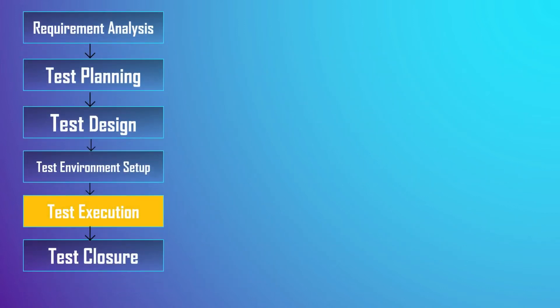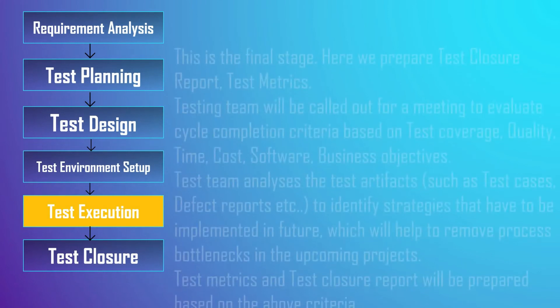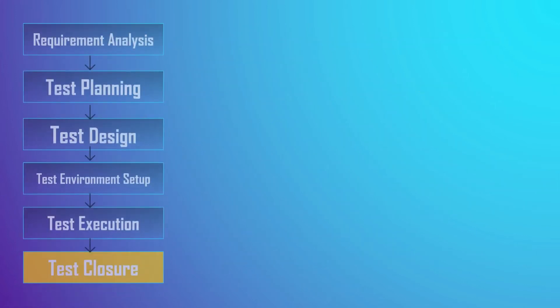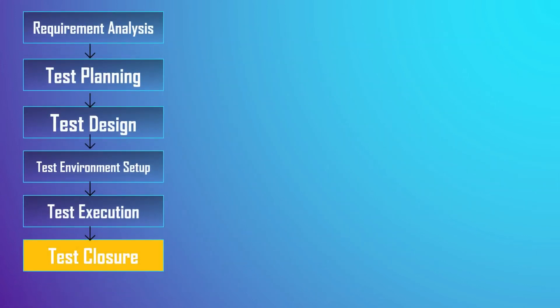Once test cases and test environments are ready, we go to the next phase — Test Execution. The test team executes test cases based on the planned test cases. If a test case result is a success or failure, the same should be updated in the test cases. Defect reports should be prepared for failed test cases and reported to the development team — for example, using a bug tracker or Quality Center. Re-testing will be done once the defect has been fixed. The deliverables of this phase are the test case execution report, defect report, and RTM.